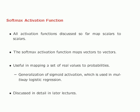All activation functions discussed so far map scalars to scalars. There is an additional activation function — the softmax — which maps vectors to vectors. It maps a set of real values to probabilities and is used as a generalization of sigmoid activation for multi-way logistic regression. We will discuss this activation function in more detail in later lectures.